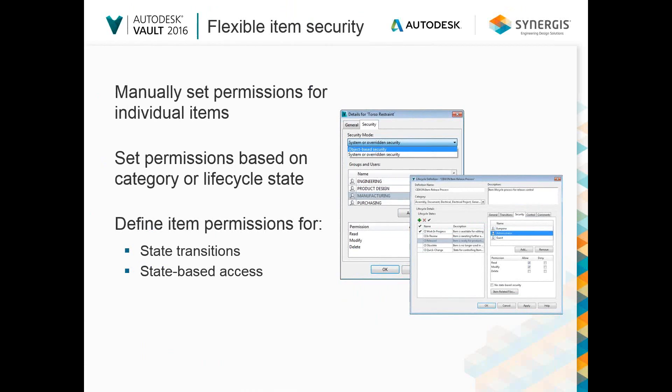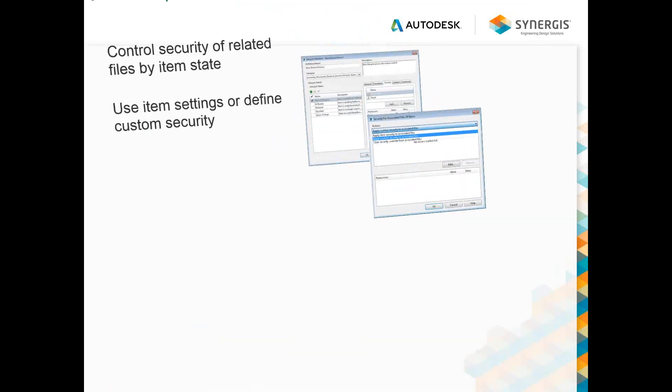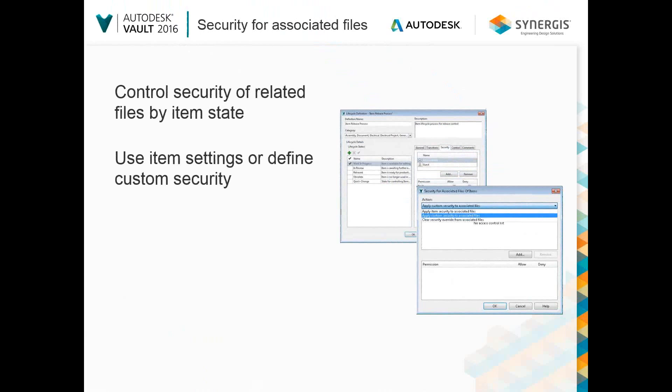Additional security options are also available to control who can view or edit items based on their current category or lifecycle state. You can make sure only the right people have access to the item at any point in time. You also have the option to extend the security definition to include the files associated with each item — controlling documents per item state with security settings that can be unique for primary, secondary, and design document link types.